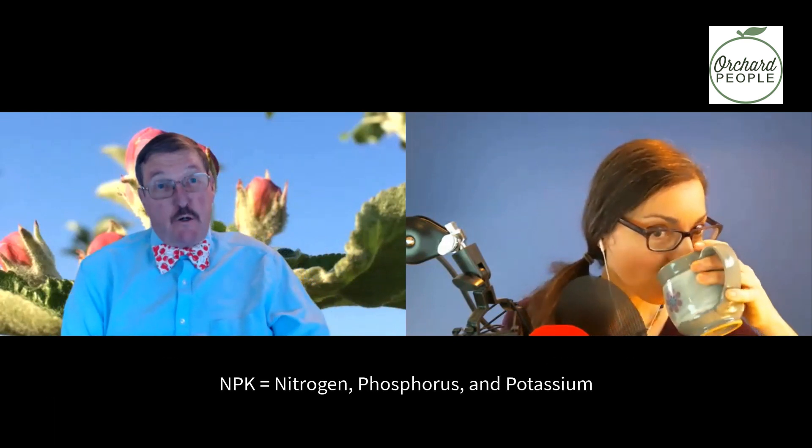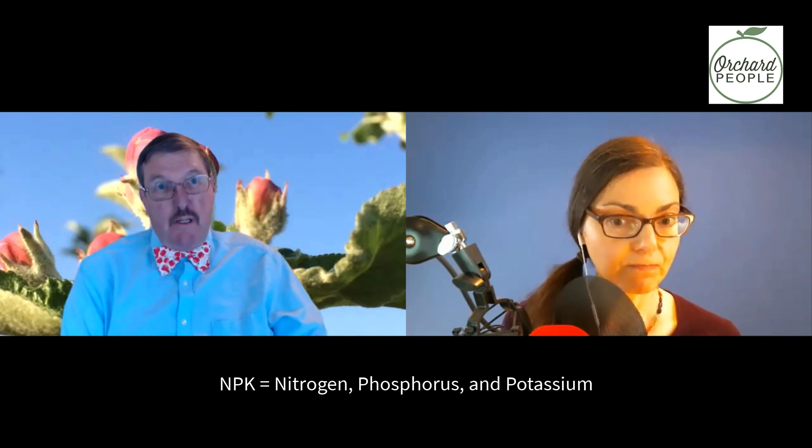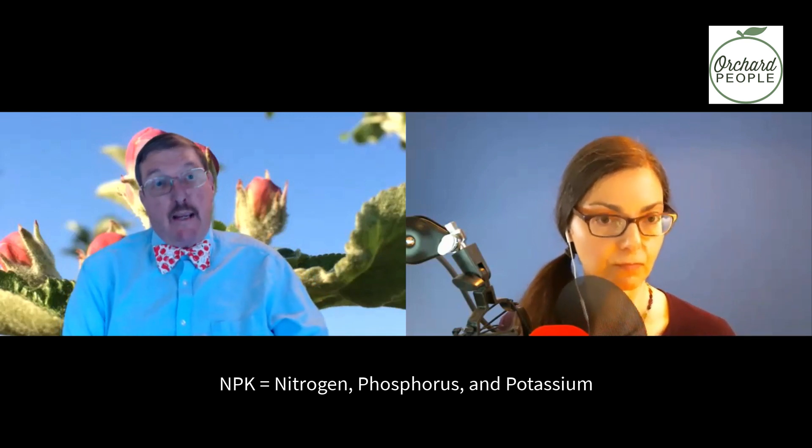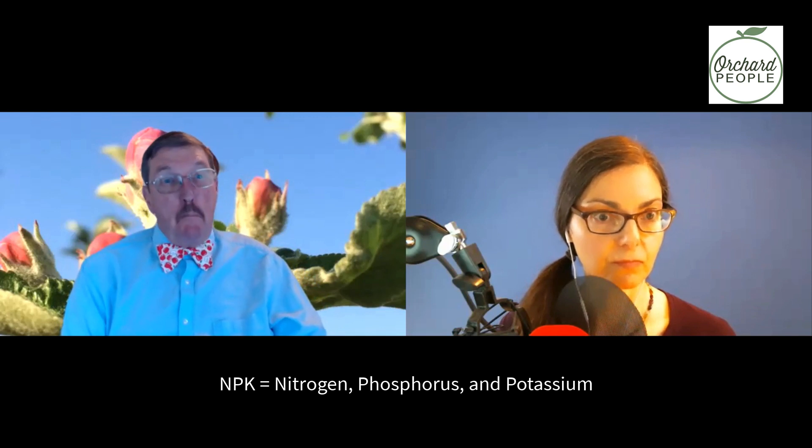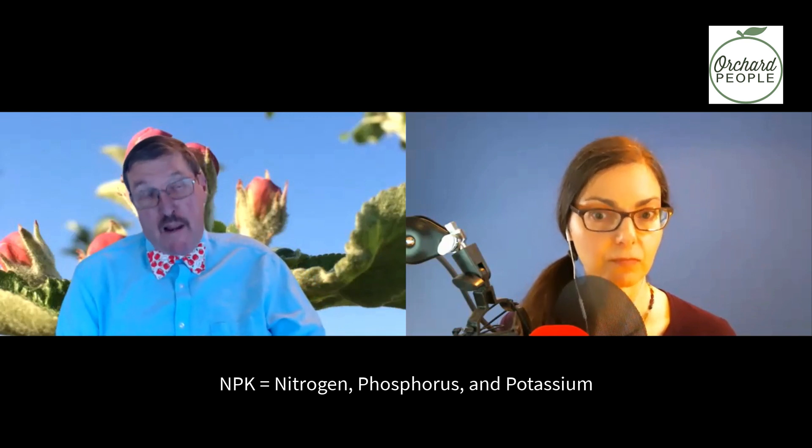Let's start with the basic nutrients that fruit trees need. When we go to garden centers, we see fertilizers with NPK values. NPK stands for nitrogen (N), phosphorus (P), and potassium (K). These are what we call macronutrients, and that's where most of our fertilizers come from.